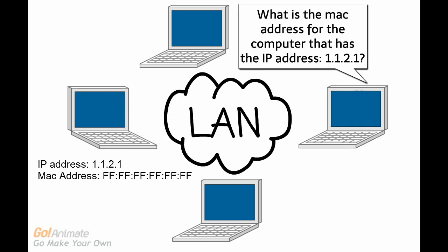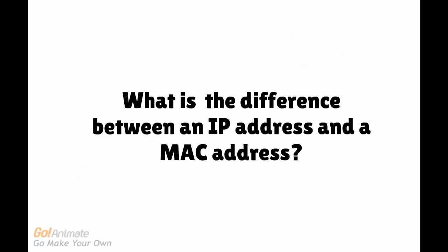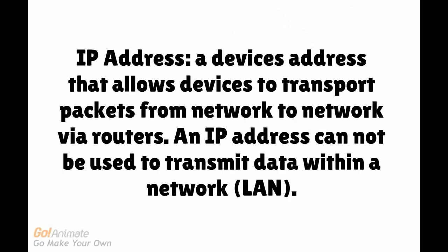In this diagram, you see a local area network and a computer that wants to send a message to the computer that has the IP address 1.1.2.1, but does not have the corresponding MAC address. You're probably wondering, what's the difference between an IP address and a MAC address? An IP address is a device's address that allows the device to transport packets from network to network via routers. An IP address cannot be used to transport data within a network, like a LAN.